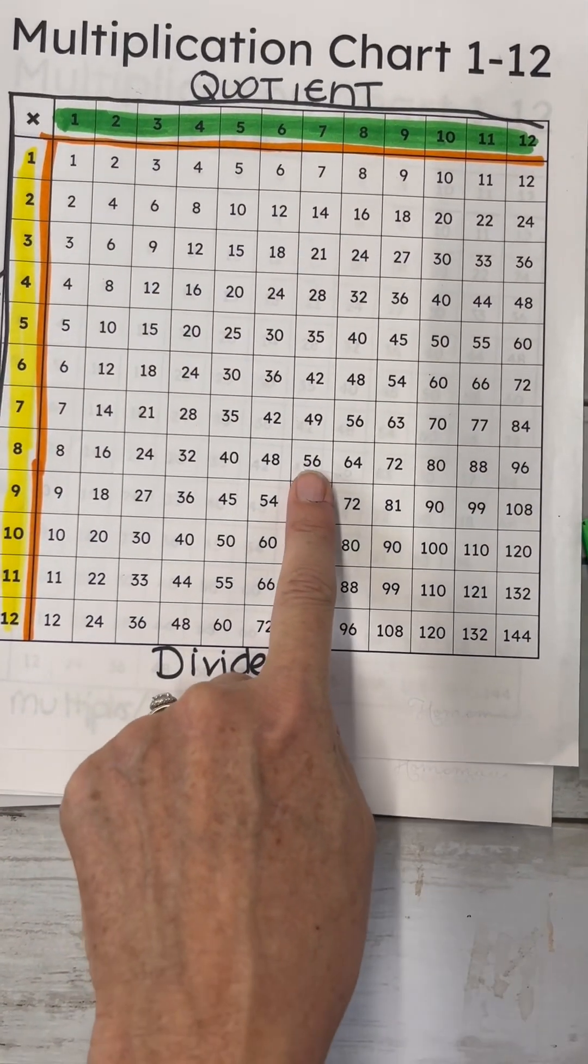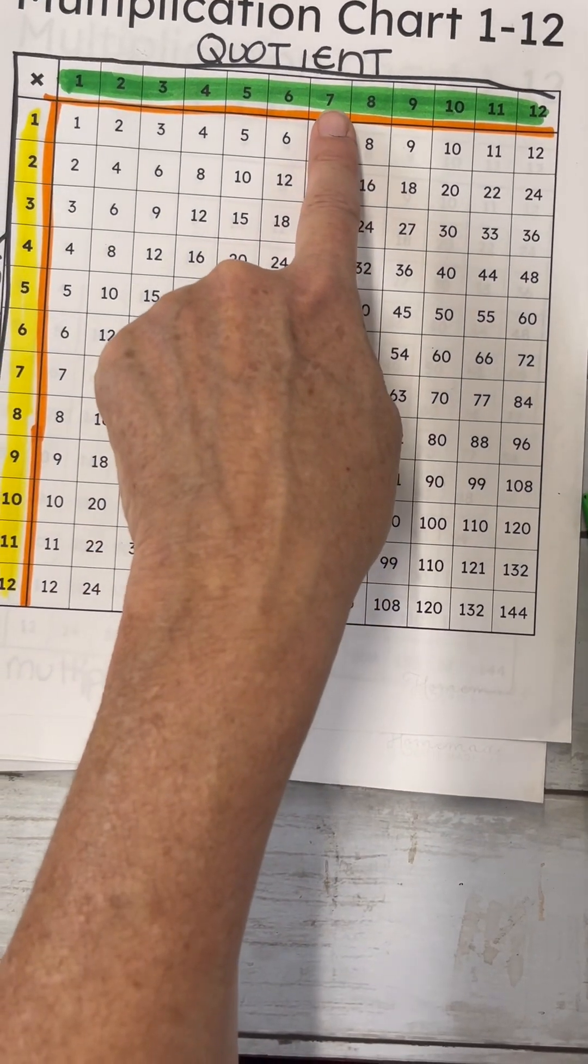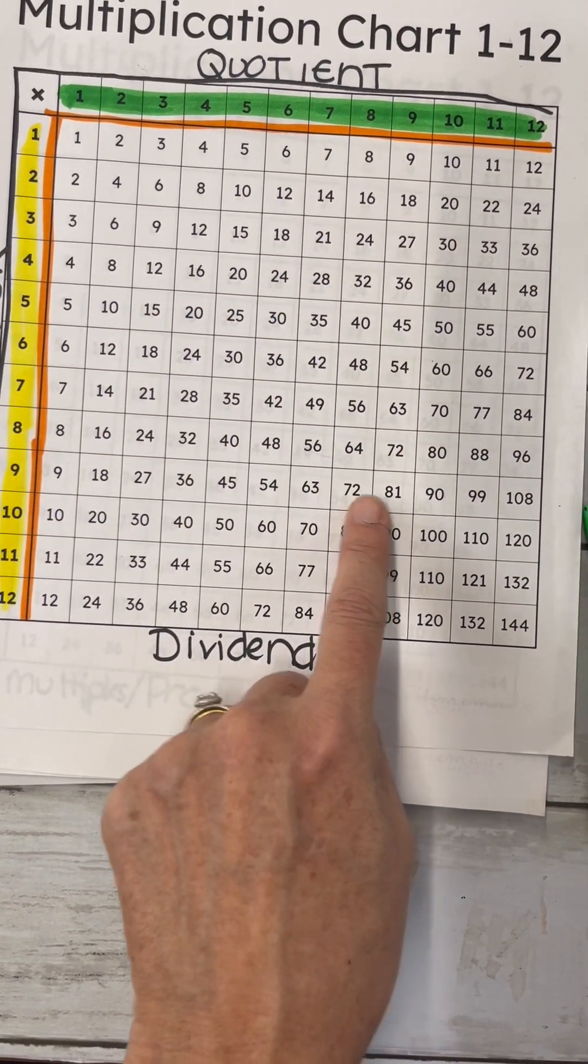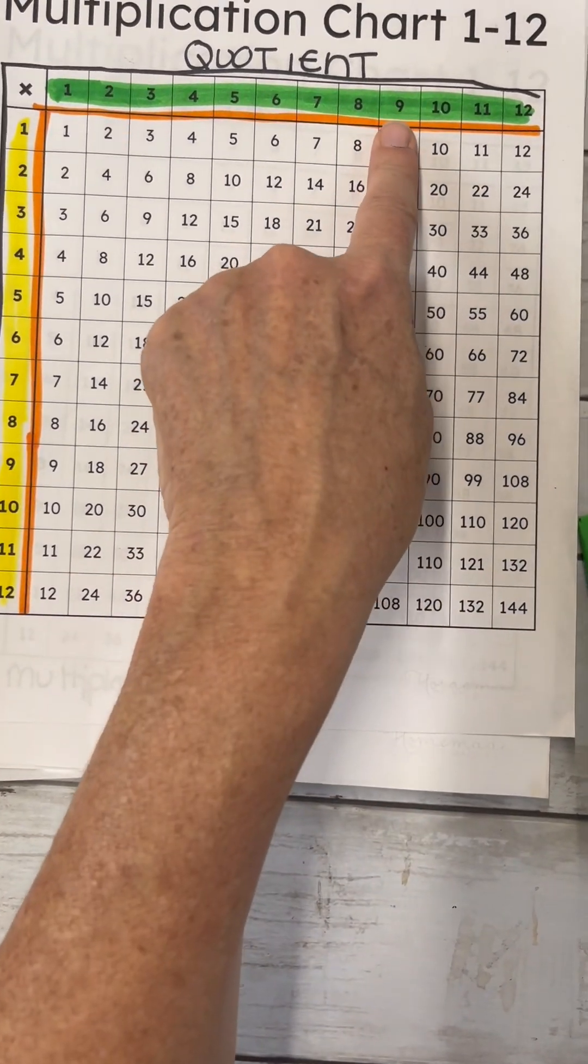So for example, 56 divided by 8 will give me the quotient of 7. 81 divided by 9 will give me the quotient of 9.